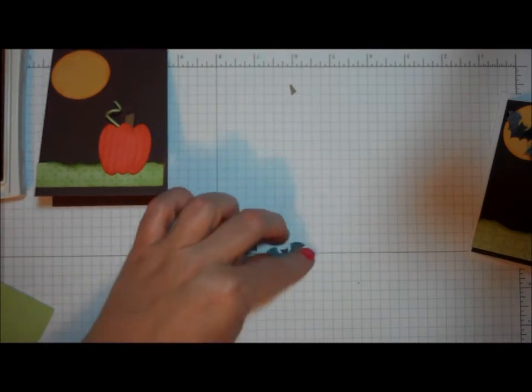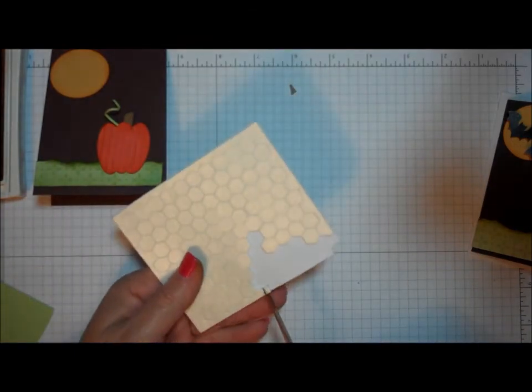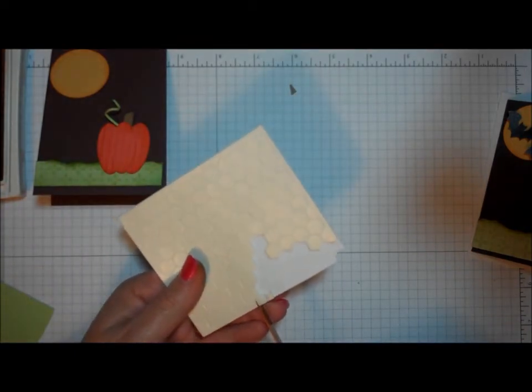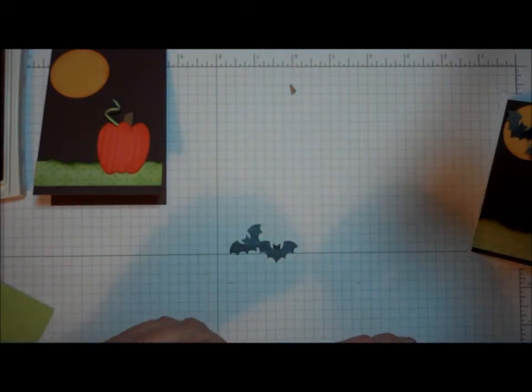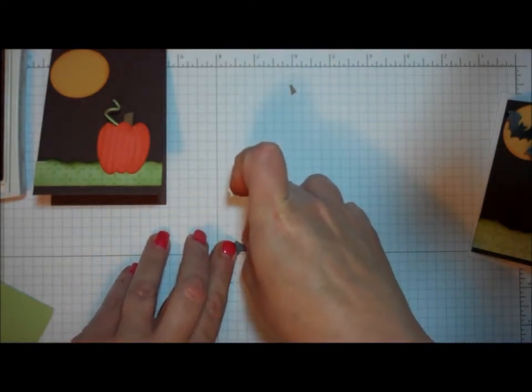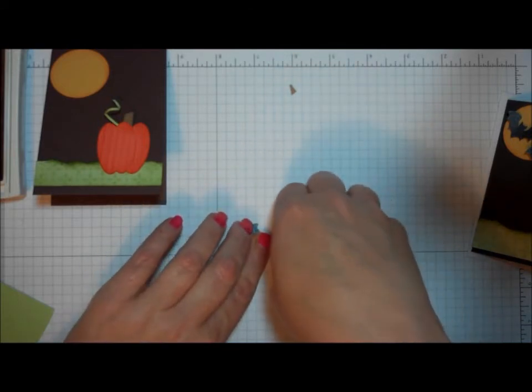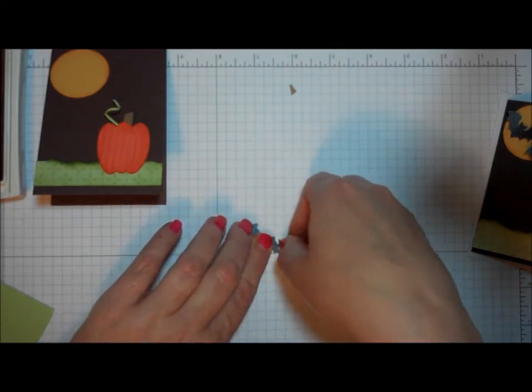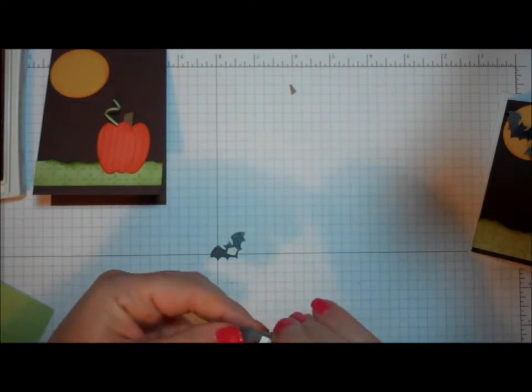So I'm going to take my bats, and what I do is I use up my extra pieces on the edge of my dimensionals. So I just cut little pieces to the size that I want, and I'm going to apply. This paper is the same on both sides, so which side of the bat I'm applying it to isn't terribly important. I just want to make sure that it doesn't show. There we go.